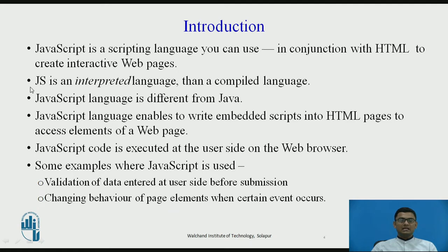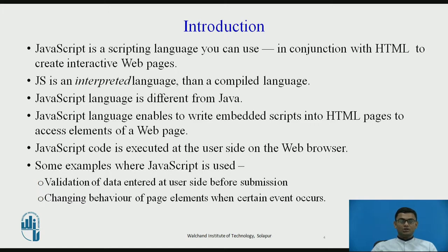JavaScript in its nature is an interpreted language rather than a compiled language, so it is directly an interpreted language. It is a language different from Java — nothing to do with Java, even if we have the name Java in JavaScript. JavaScript enables you to write embedded scripts in your HTML page, or if you want to write it in a .js file different from your HTML file, you can do that as well and then import the .js file to your HTML page.